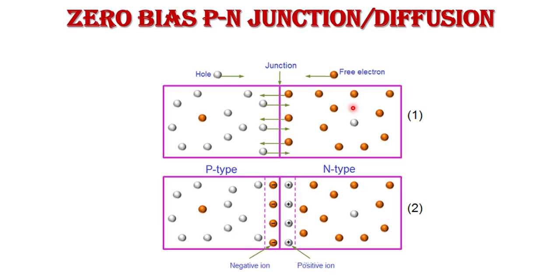What is diffusion? When high concentration of electrons from the n-type semiconductor move into the p-type semiconductor, and high concentration of holes from the p-type move toward the n-type semiconductor, this movement of charge carriers is called diffusion. Free electrons from the n-side diffuse into the p-side and recombine with holes there. Each electron diffusing into the p-side leaves behind a positive immobile ion on the n-side.